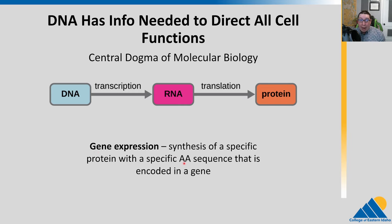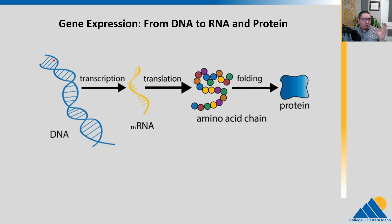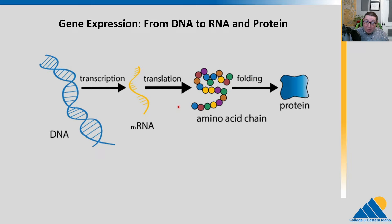Gene expression is the process of synthesizing a specific protein with a specific amino acid sequence. Please note, if I say AA, that means amino acid. Transcription is taking the DNA and converting that into an RNA copy — for protein coding genes, that's mRNA. Then translation is the process of taking that mRNA and building an amino acid chain. That chain of amino acids will then fold, as we've talked about previously, into a full working protein that will go off and do its own thing.